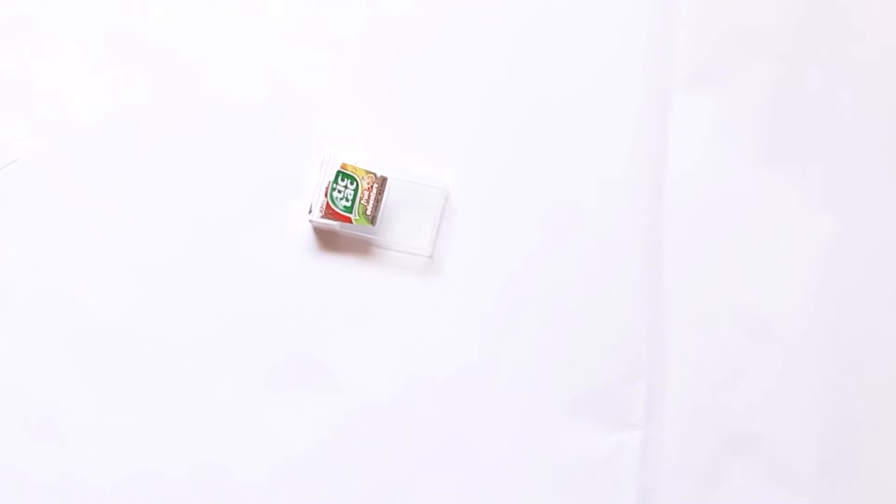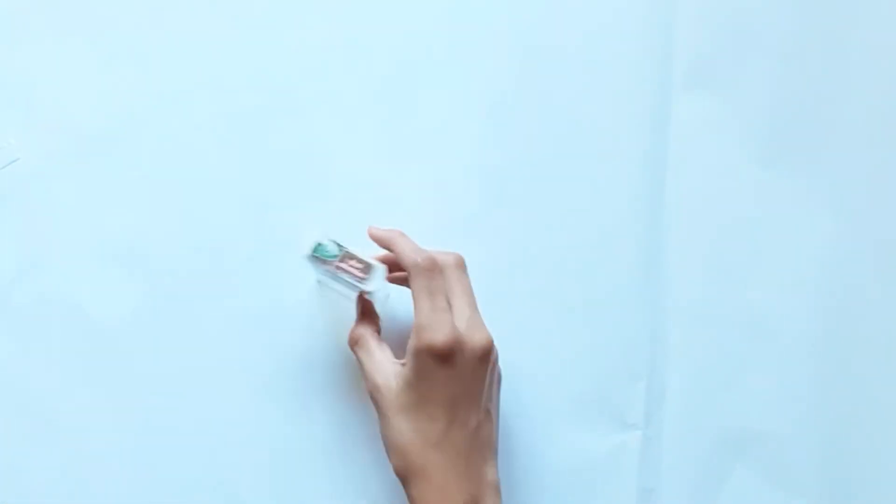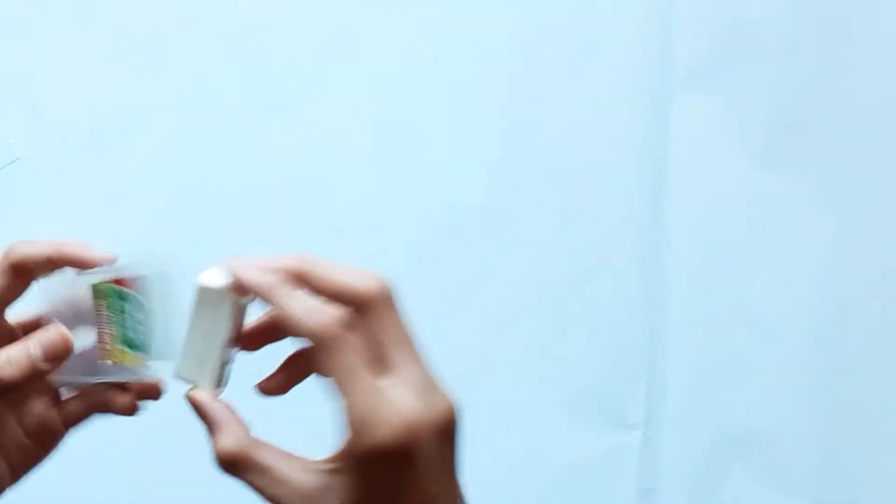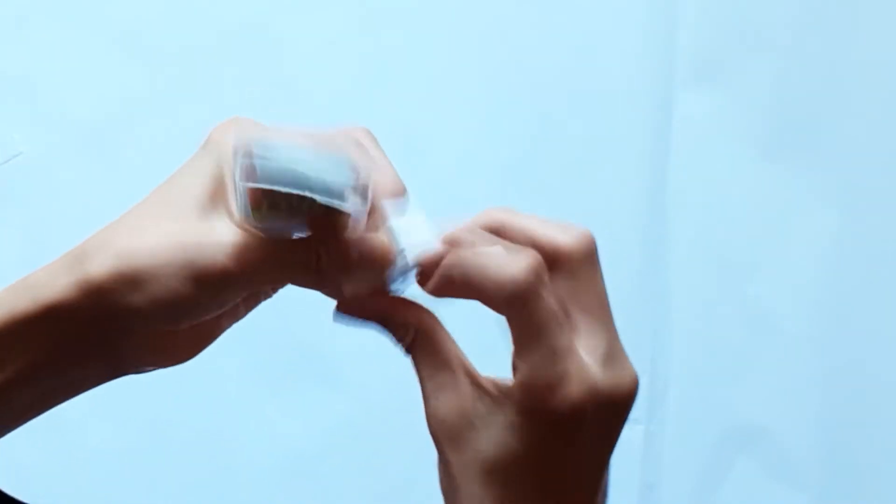Alright, let's get started. So the first thing that we're going to do is take the Tic-Tac container and open it like this. It's pretty easy. After a little bit of prying, you're going to end up with two pieces, the container and the plastic top.